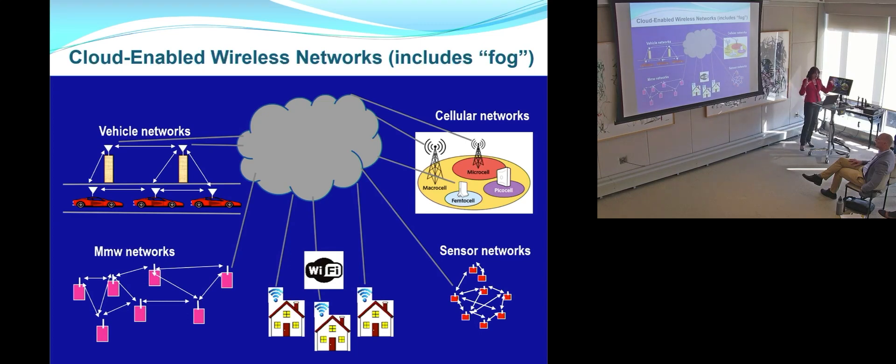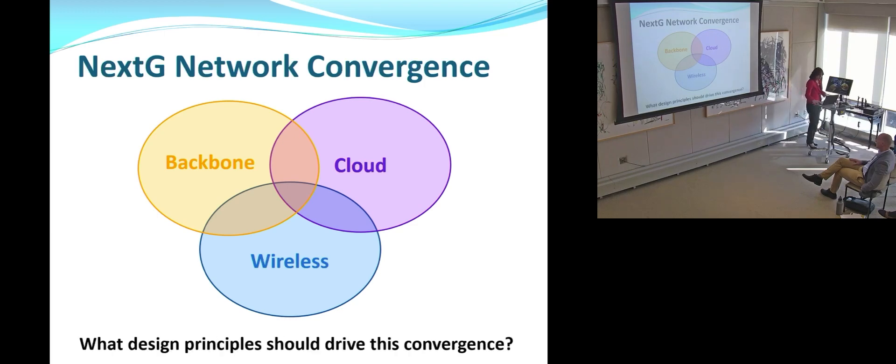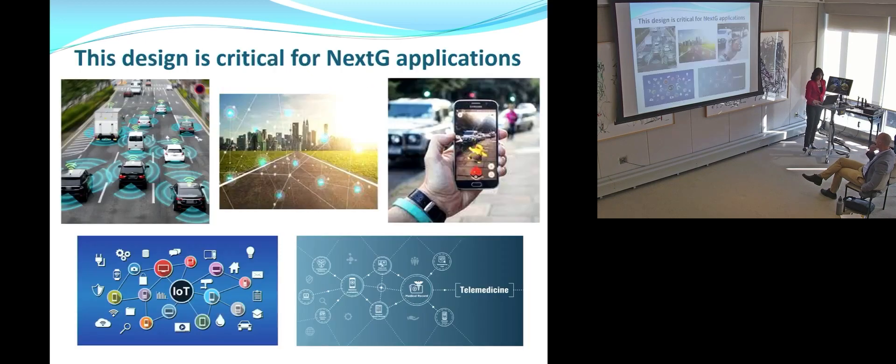So this kind of leads to this notion of cloud-enabled wireless networking. What should we be putting in the cloud for all of these different types of networks? And how do we think about not just the wireless optimization, but also the cloud and the backbone together? This is really important for the applications of this next generation of networks. So as we have automated highways, telemedicine, doing things with our phone that we can't even imagine, Internet of things. We can't just think about the wireless because so much of the information is going to go back to the cloud and be processed in the cloud. So how do we distribute between the edge and the cloud? Where should the optimization sit? I think there's a lot of interesting questions here.